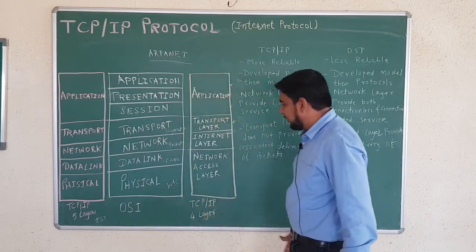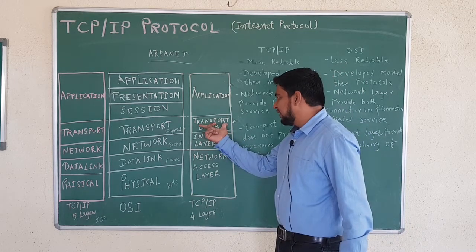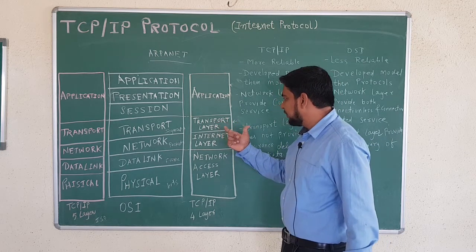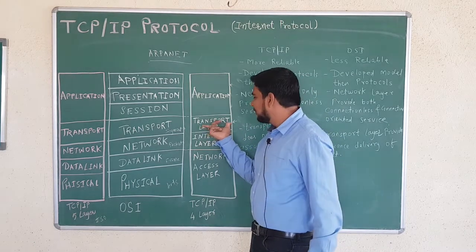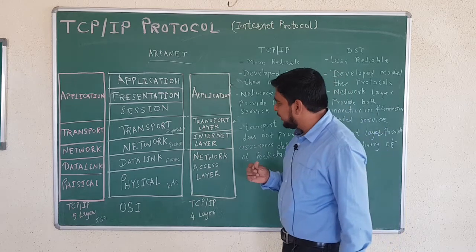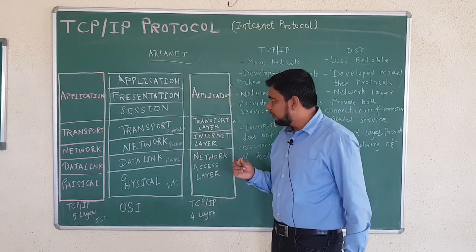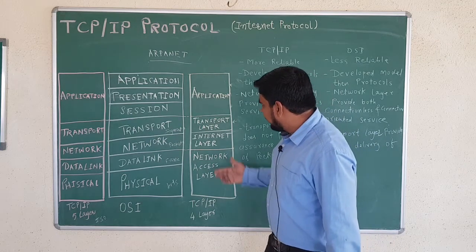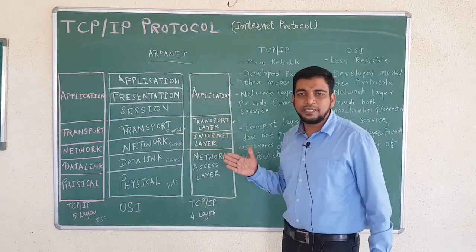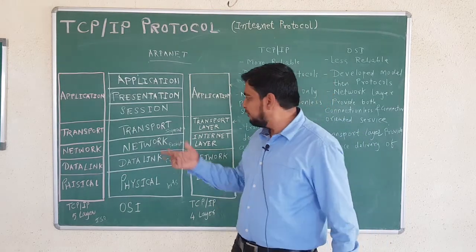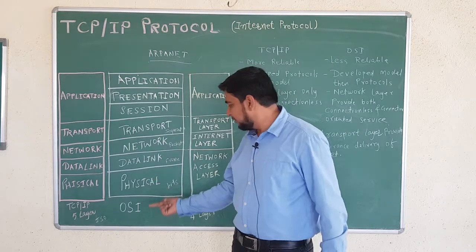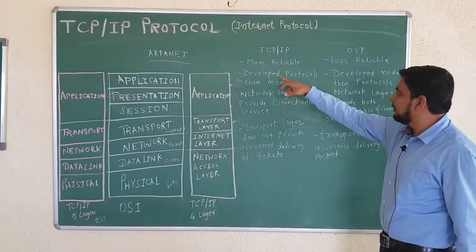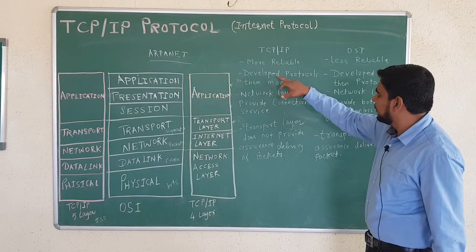The data flow goes from the transport layer down to the physical layer. The transport layer is responsible for port-to-port delivery, error control, and flow control — using methods like checksum. All these layer functions have already been covered when we discussed the OSI reference model. In TCP/IP, it is clear that protocols were developed first and then the model. Whereas in OSI, the model was developed first and then the protocols.